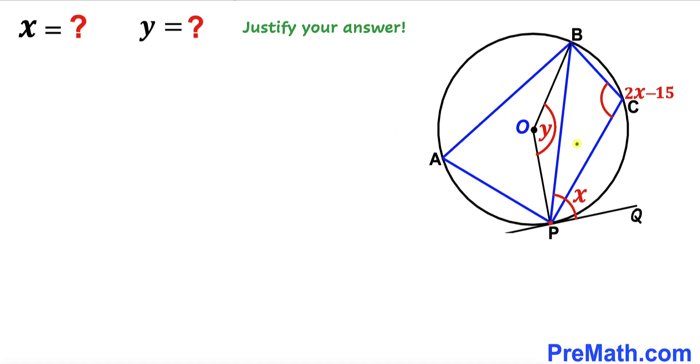Welcome to PreMath. In this video we have a bunch of chords inside this circle with center O, as you can see in this diagram. Point P is our point of tangency, angle BPQ is X, angle BOP is Y, and angle PCB is represented by 2X minus 15. Our task is to find the value of angle X and angle Y, and we must justify our solution.